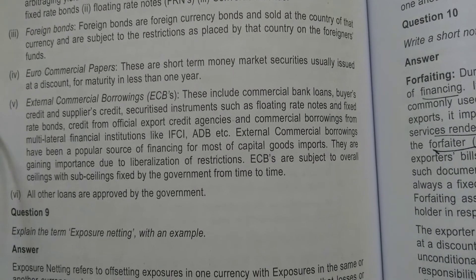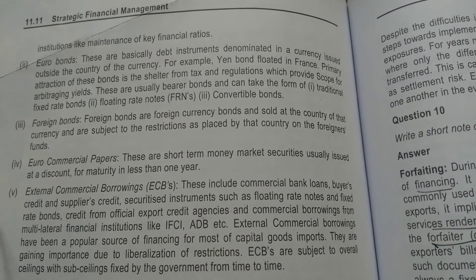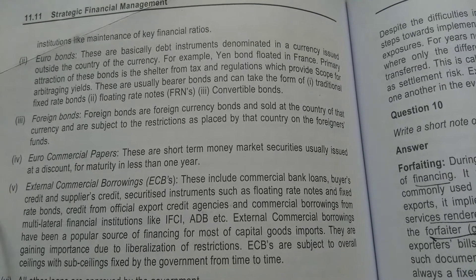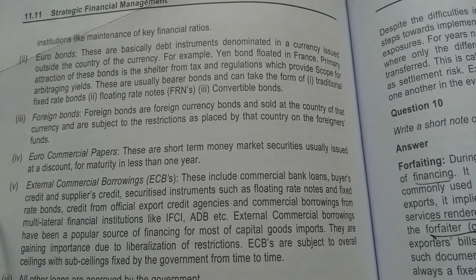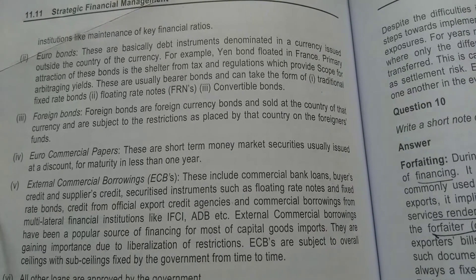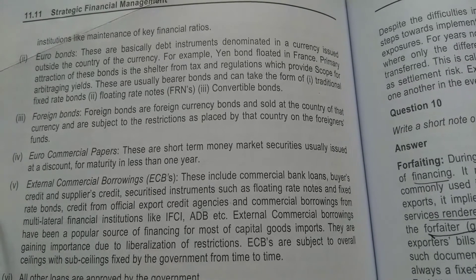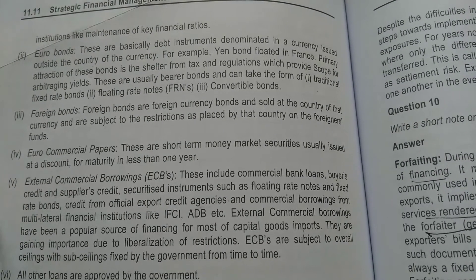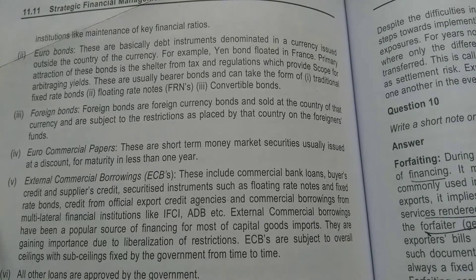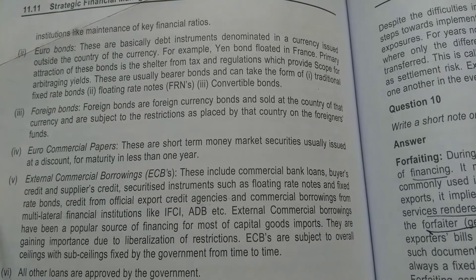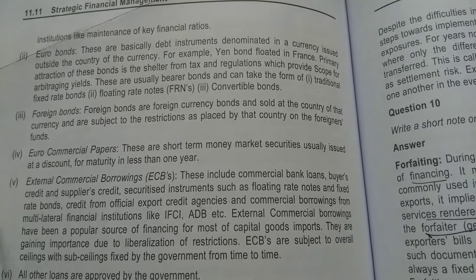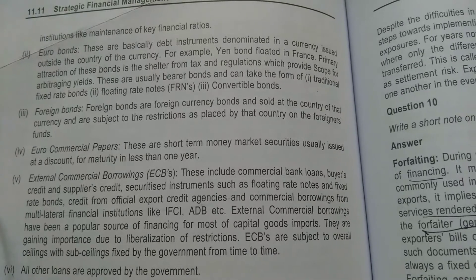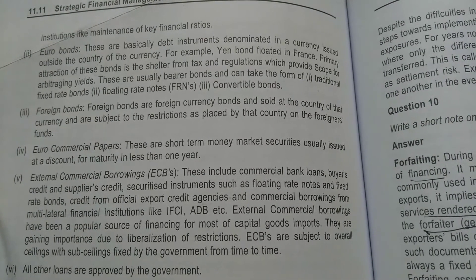Fifth, external commercial borrowings (ECBs). These include commercial bank loans, buyers credit and suppliers credit, securities instruments such as floating rate notes and fixed rate bonds, credits from official export credit agencies, and commercial borrowings from multilateral financial institutions like IFC, ADB, etc.